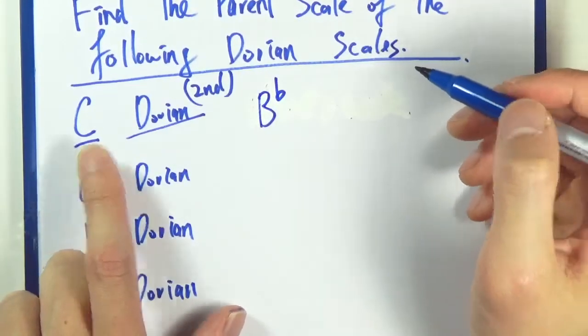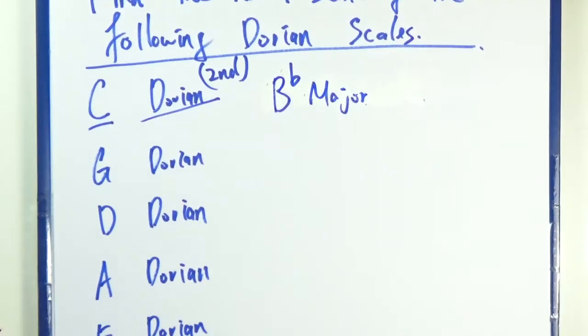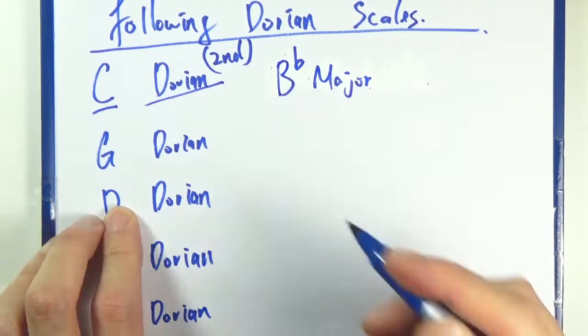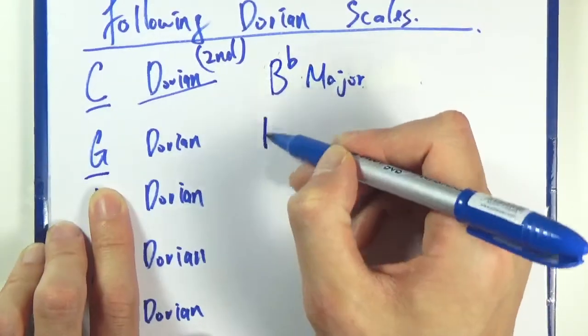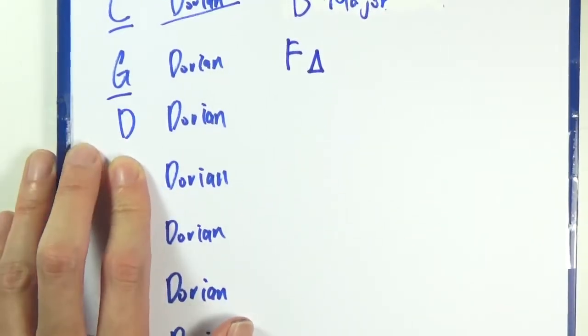And make it a major, so B flat major scale is your parent scale. All right, we'll do the same thing. G Dorian - you go down a whole step, that's F major. I'm doing the shorthand here. D Dorian...